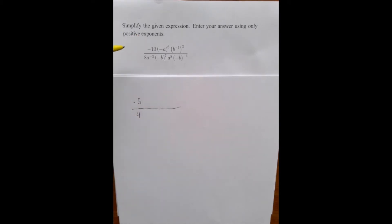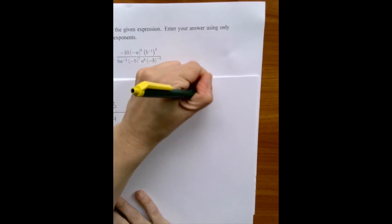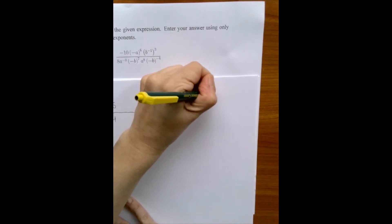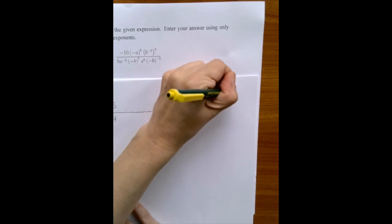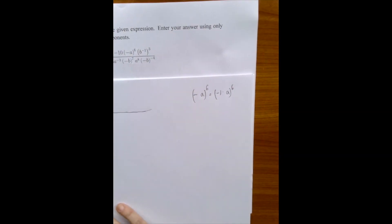So minus e to the 6th power. That is a tricky part of the problem as well. Minus a to the 6th power can be interpreted as minus 1 times a to the 6th power. And then, which rule?